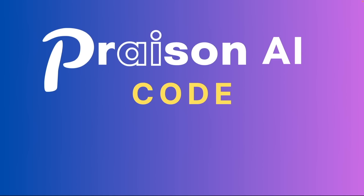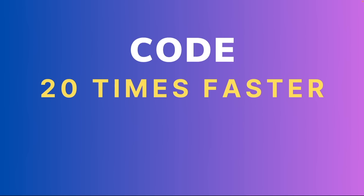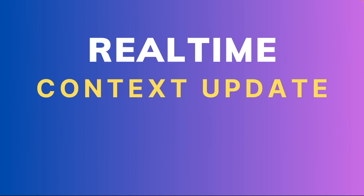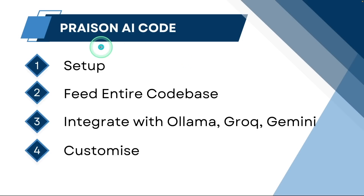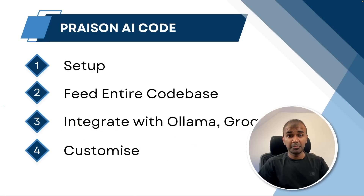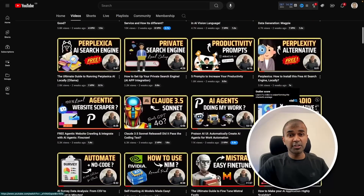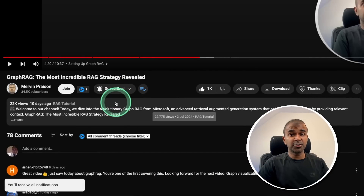But with Prison AI Code, AI knows the entire code base, you can chat with the entire code base, you can code 20 times faster, it has real-time context update, and you can use your natural language to code. By the end of this video, you will know how to set up Prison AI Code, how to feed the entire code base, how to integrate with Ollama, Groq, and Gemini, and finally how to customize. I regularly create videos about artificial intelligence on my YouTube channel, so do subscribe and click the bell icon.